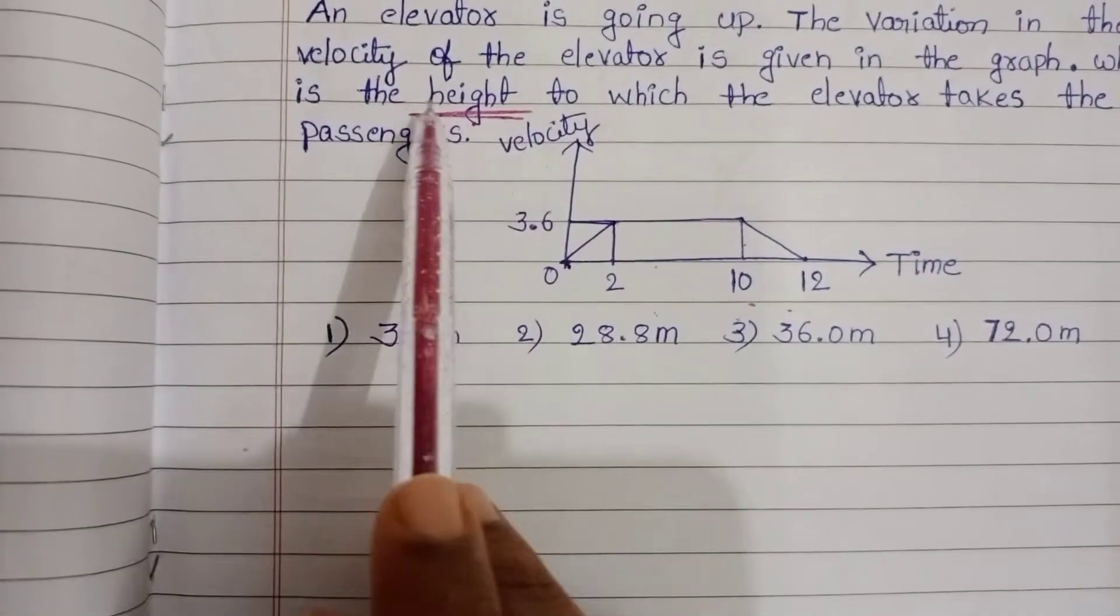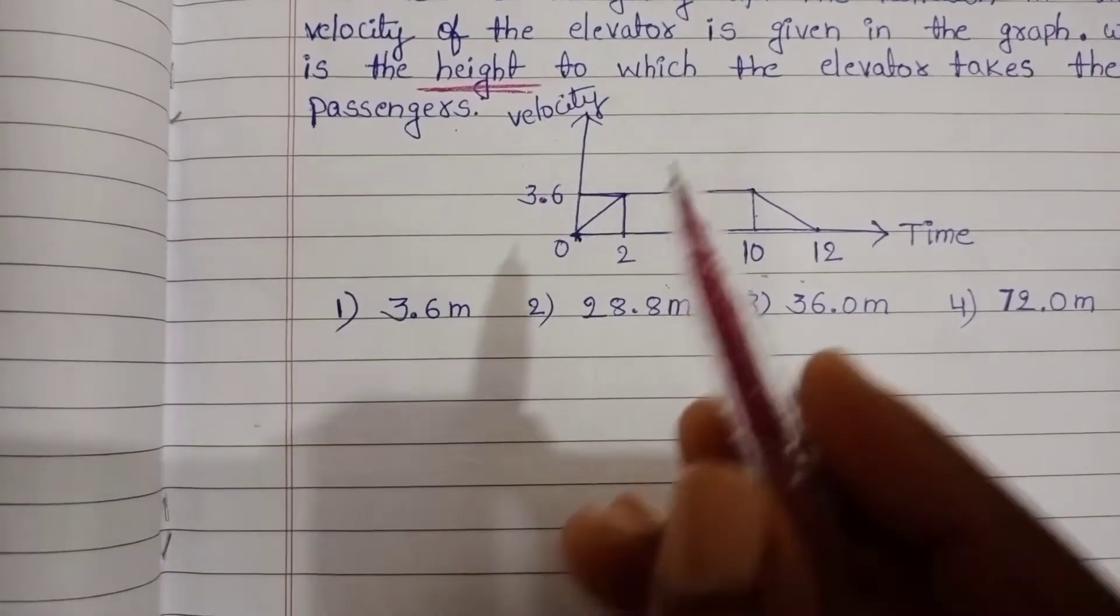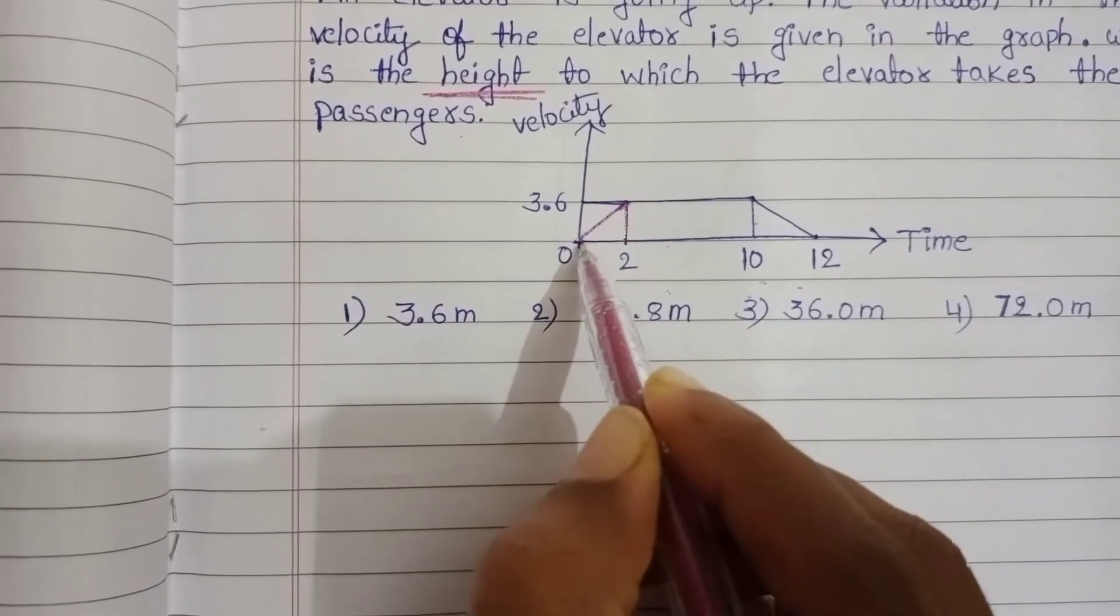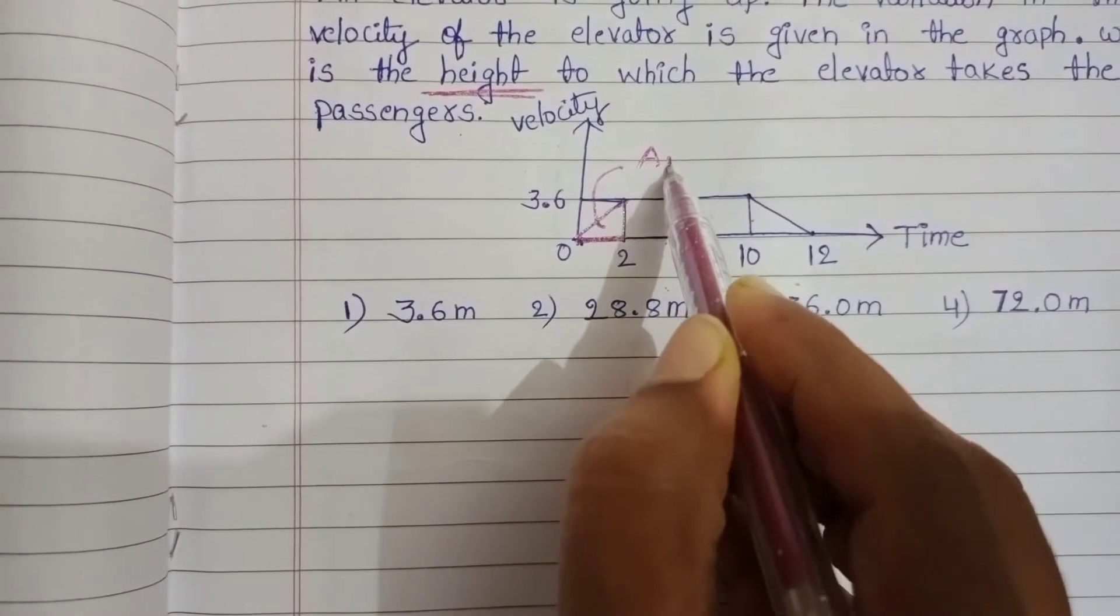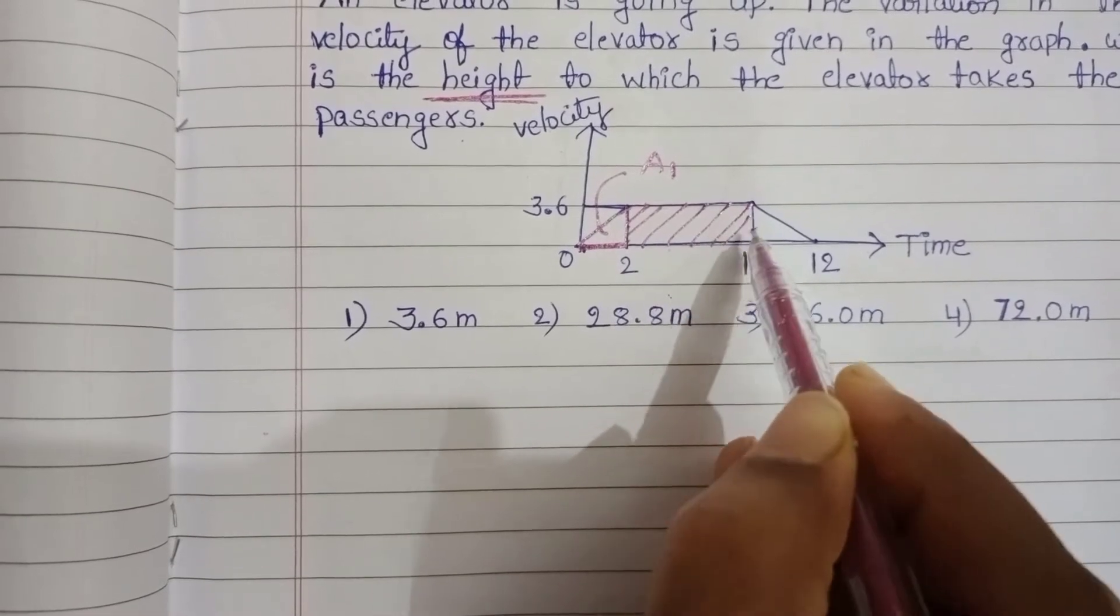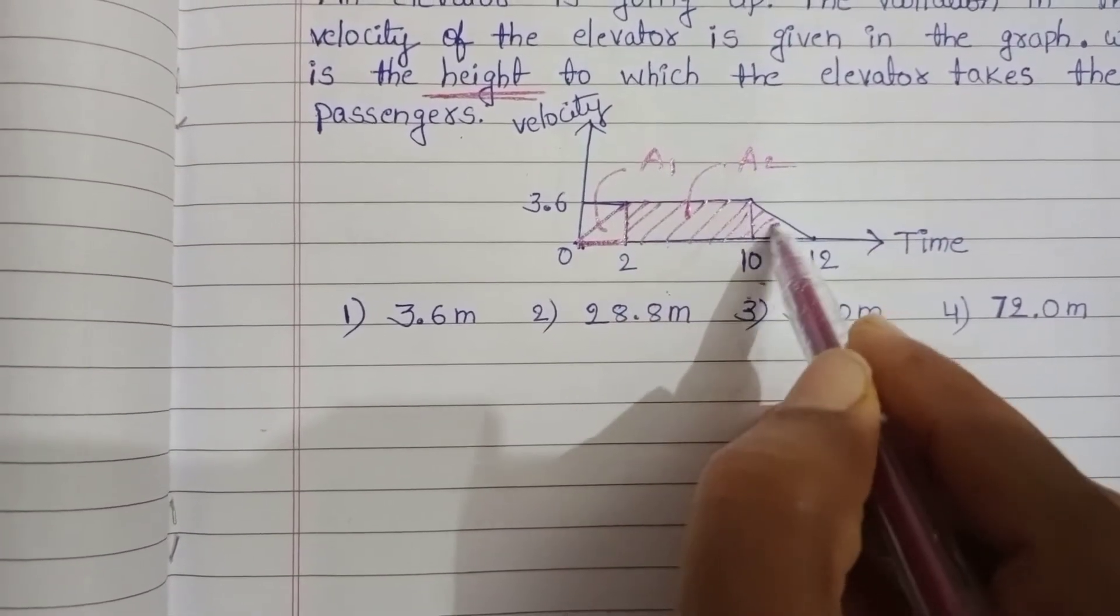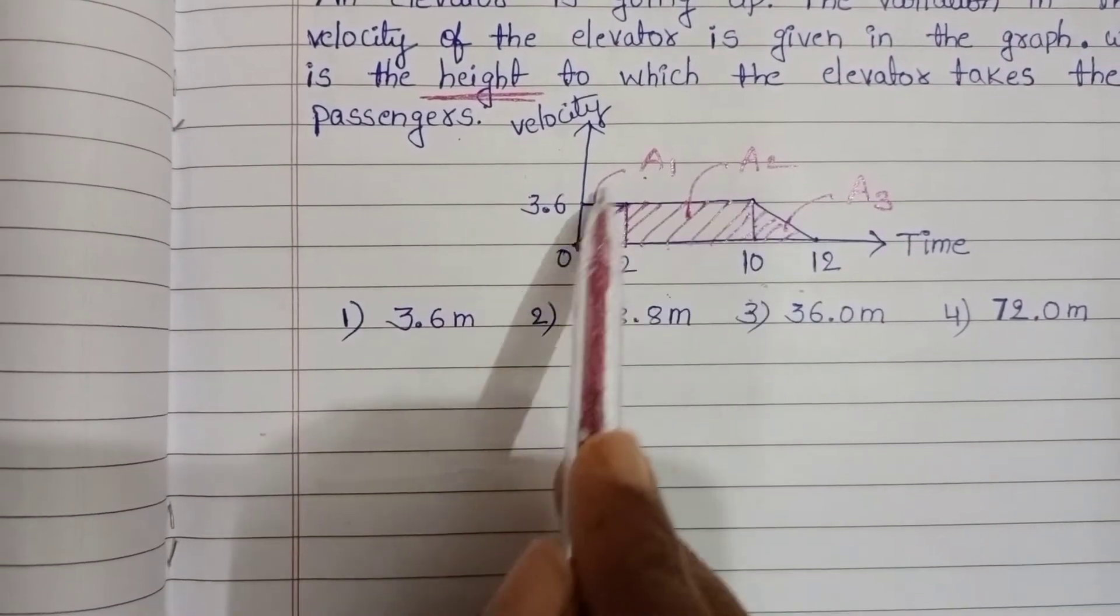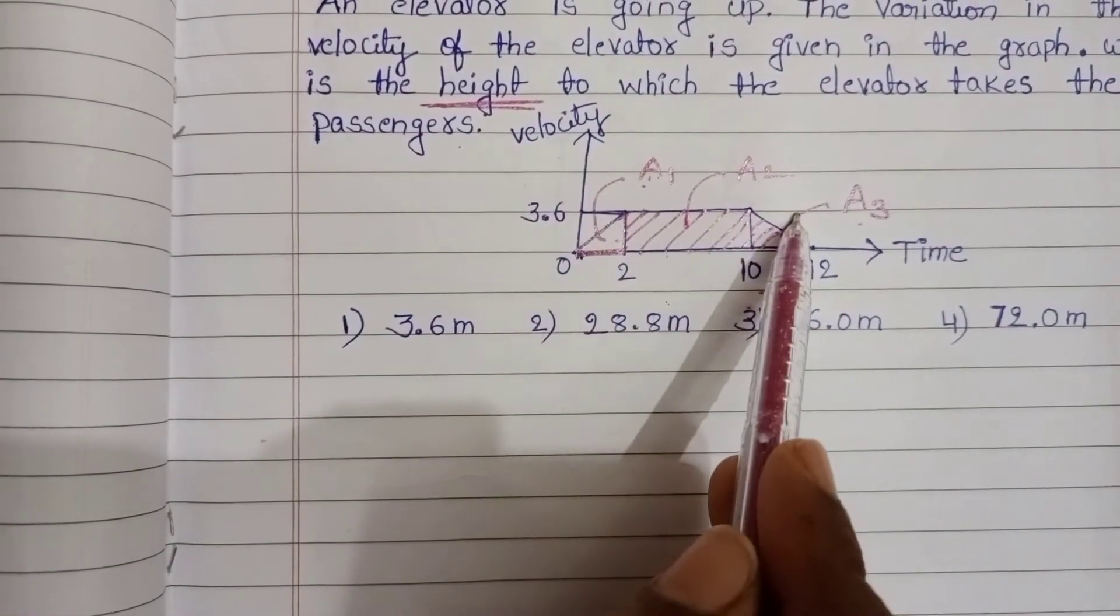Area of velocity-time graph gives the height to which the elevator takes the passengers. First, area of this part is triangular shape, let it be A1, and area of this part is rectangular in shape, A2. Again here triangular part A3. So sum of all these areas, A1 plus A2 plus A3, gives the height.